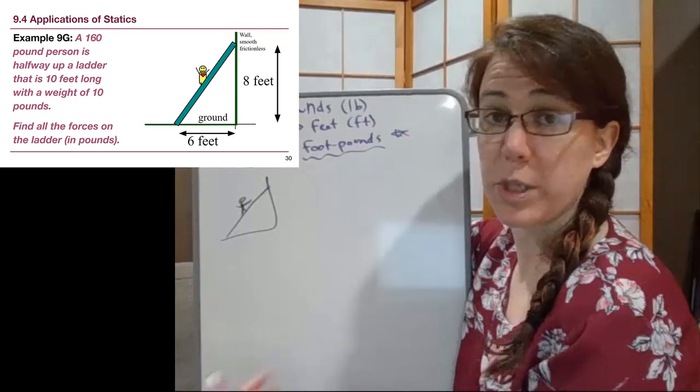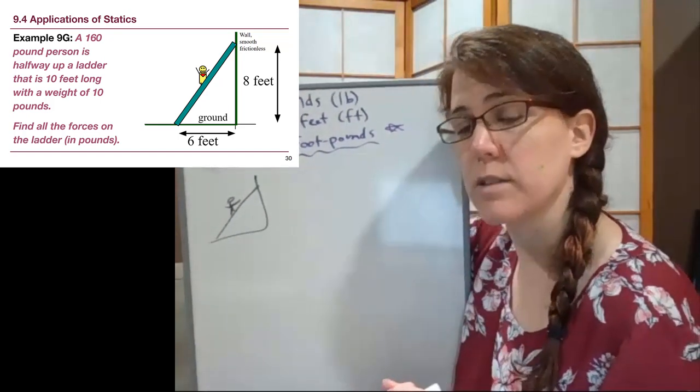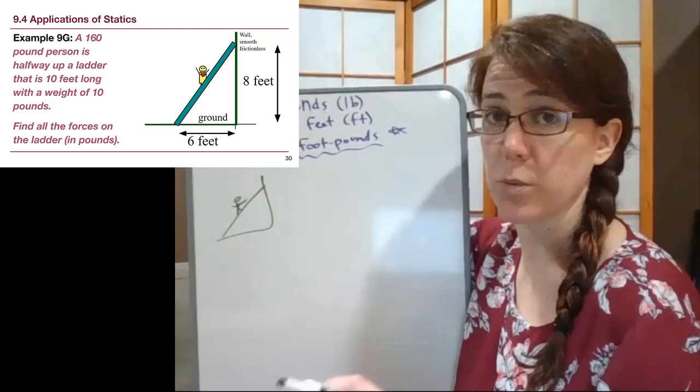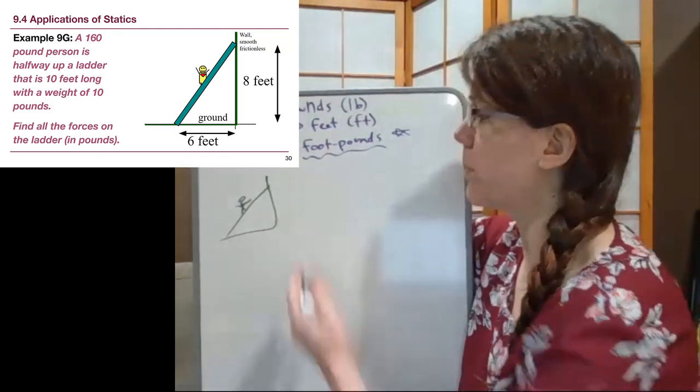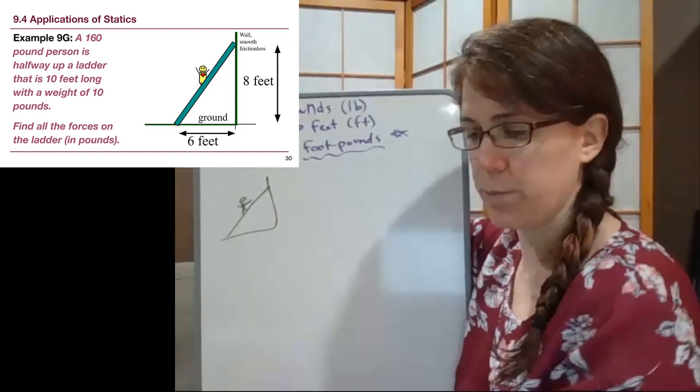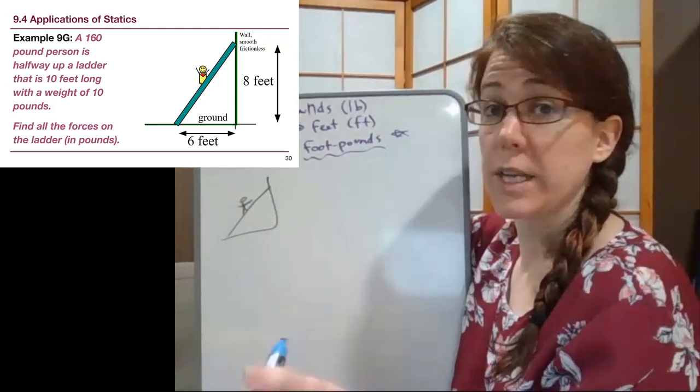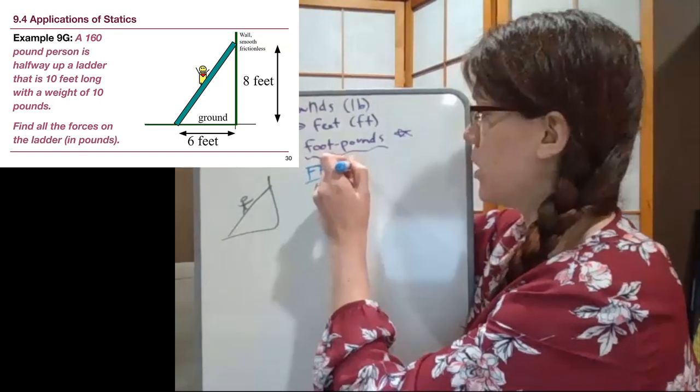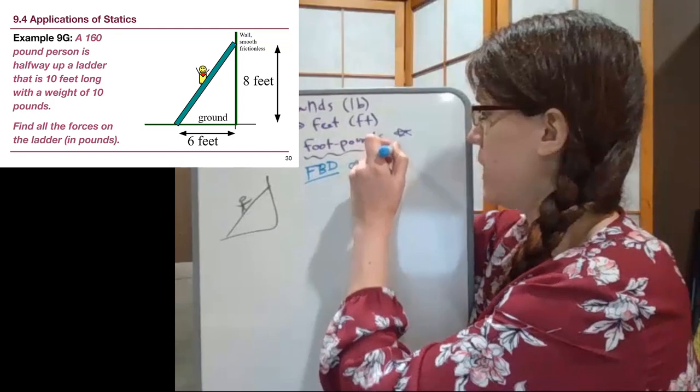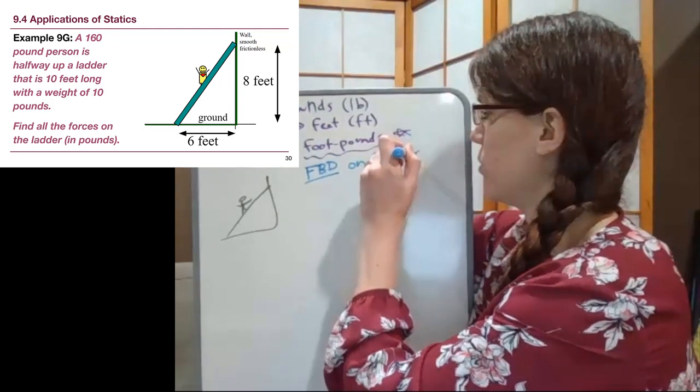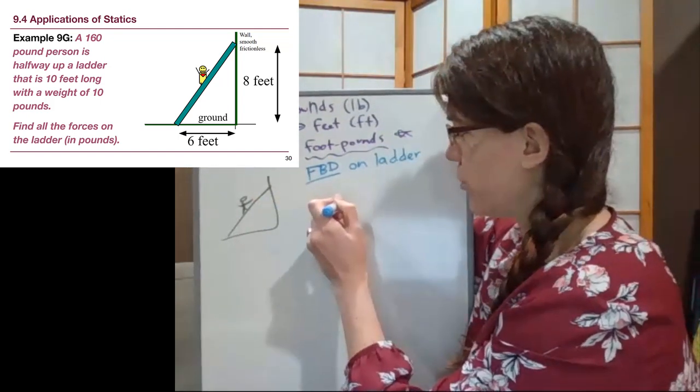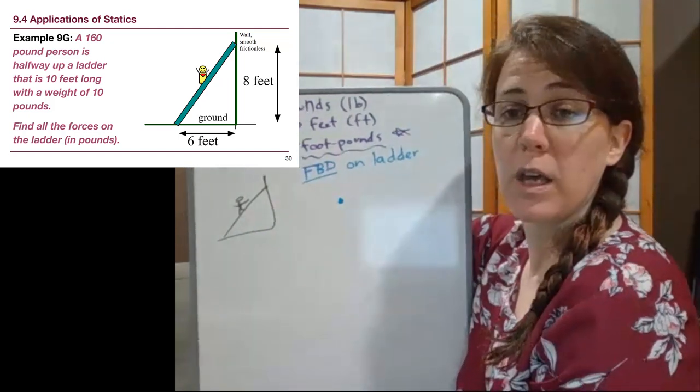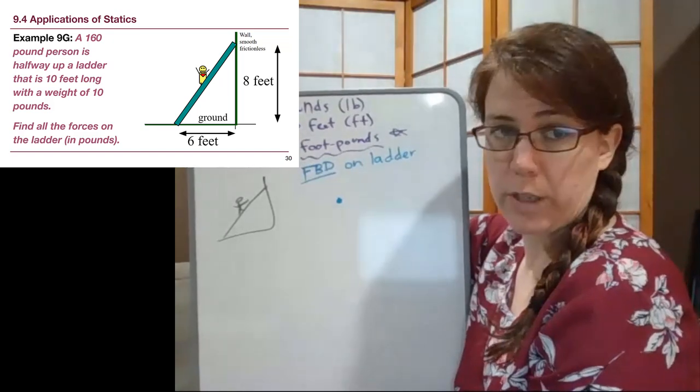We have a ladder with a person standing on it and we have some distances here. We don't have angles, but what we're going to see is that because we have the distances we need, we won't have to write down angles. We have our simple little picture here. Now we need to think of the forces - the free body diagram, the forces acting on the ladder.